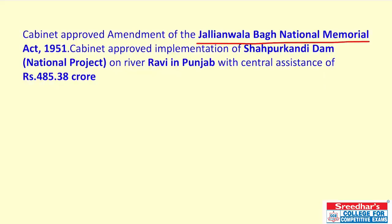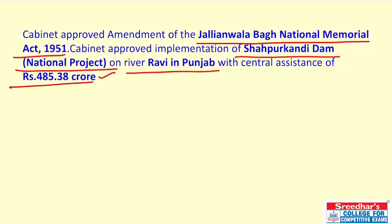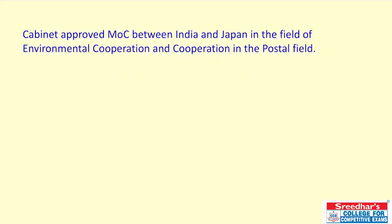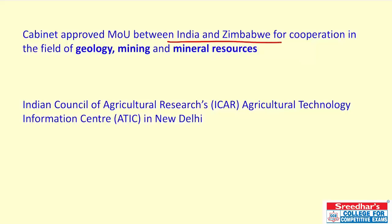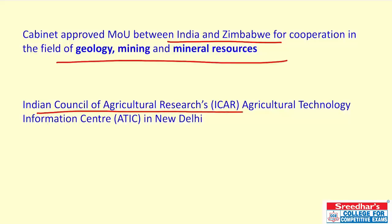Cabinet has approved the amendment of the Jallianwala Bagh National Memorial Act 1951 and also approved the implementation of the Shahpur Kandi Dam national project to be built on the River Ravi in Punjab, with a center allocation of ₹485.38 crore. Cabinet has also approved an MoC between India and Japan in the fields of environmental cooperation and postal cooperation, and an MoU between India and Zimbabwe in the field of geology, mining, and mineral resources.